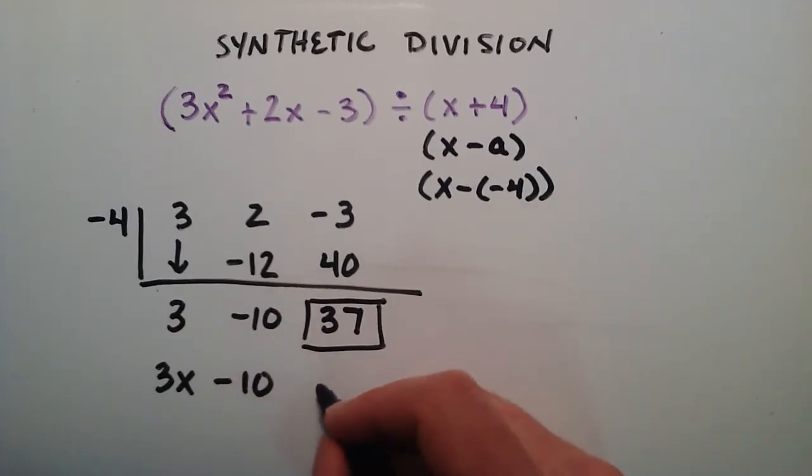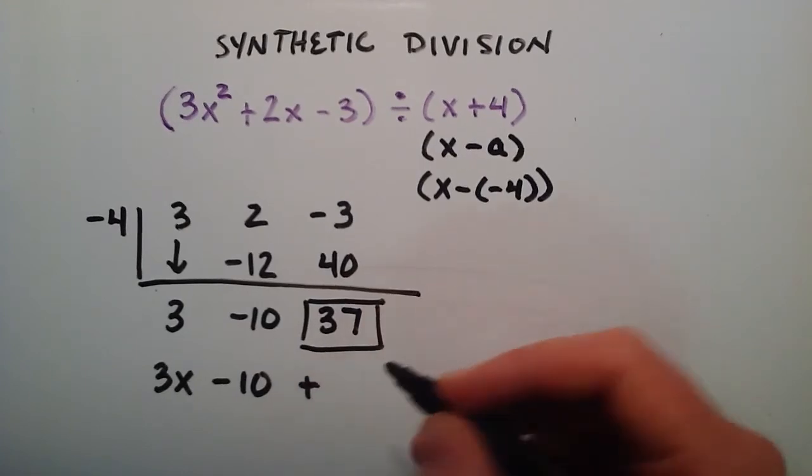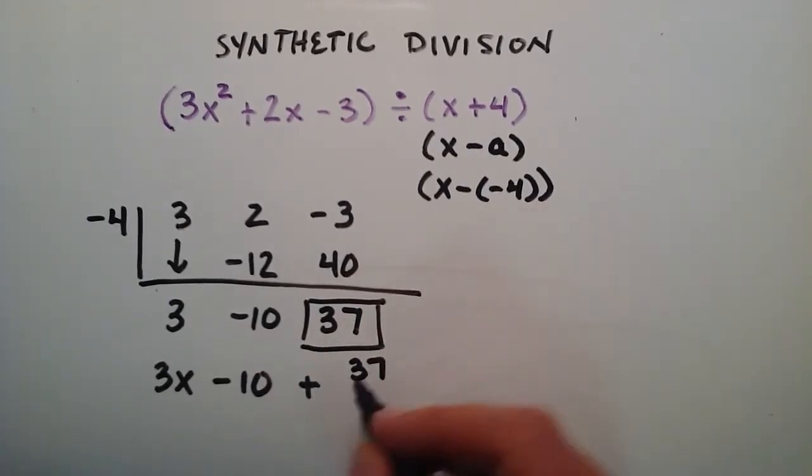What we do with the remainder is we simply say plus whatever that number was. In this case, our remainder is 37. And that's divided by x plus 4 right here.